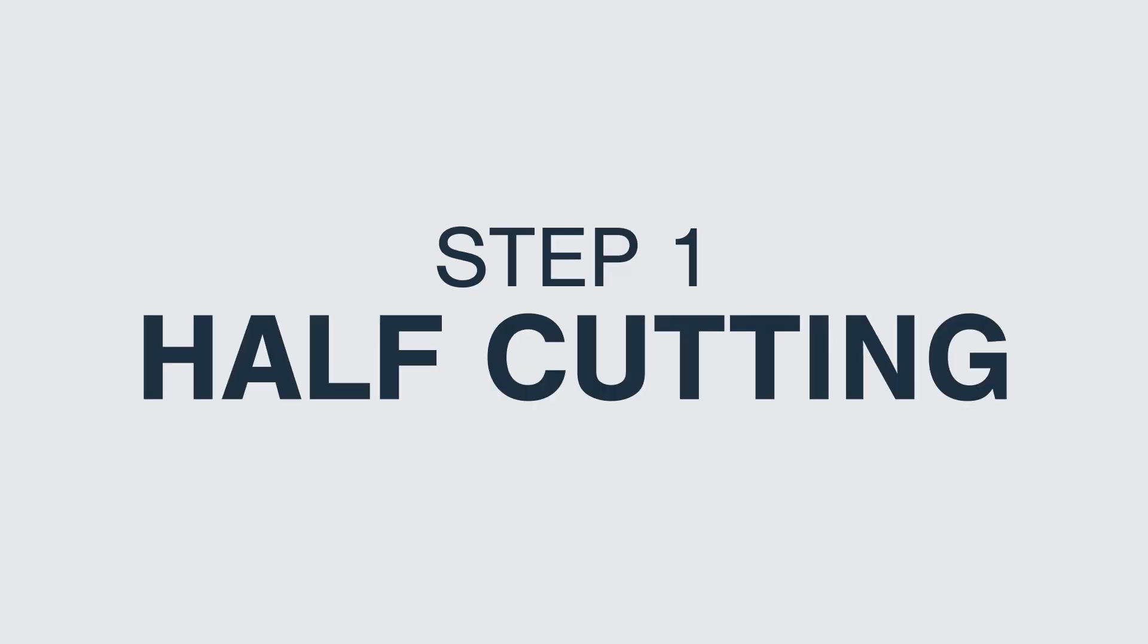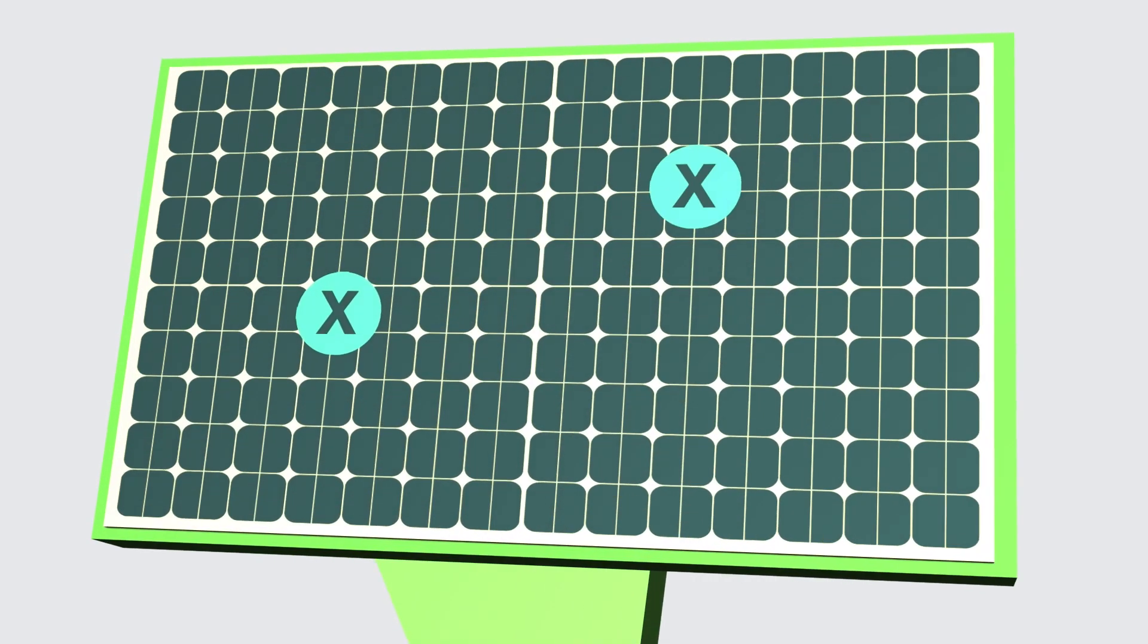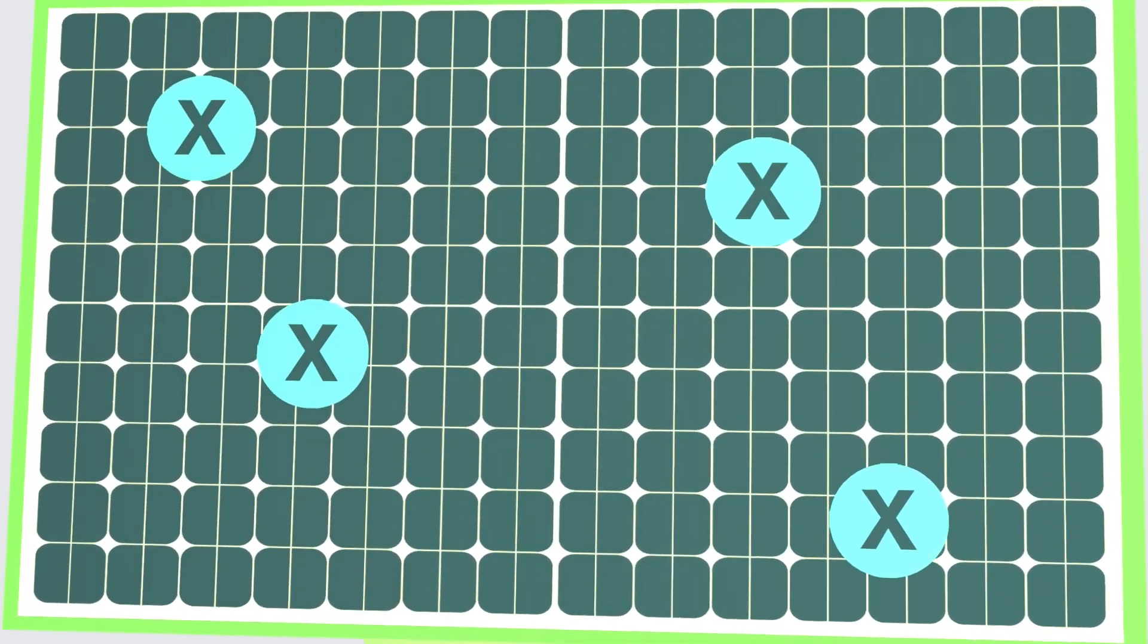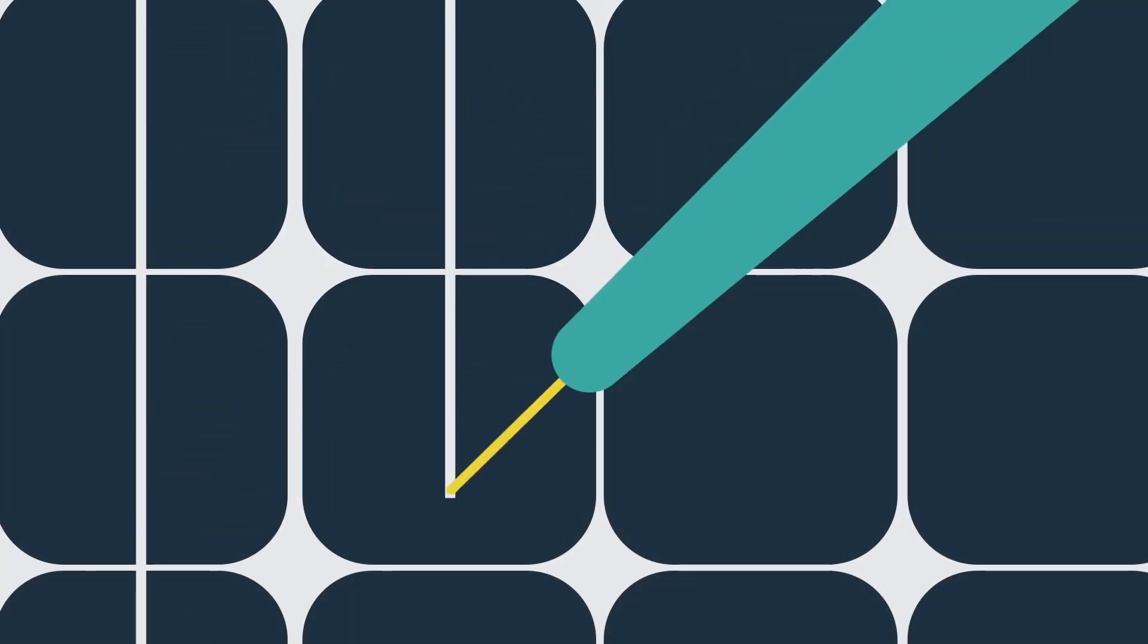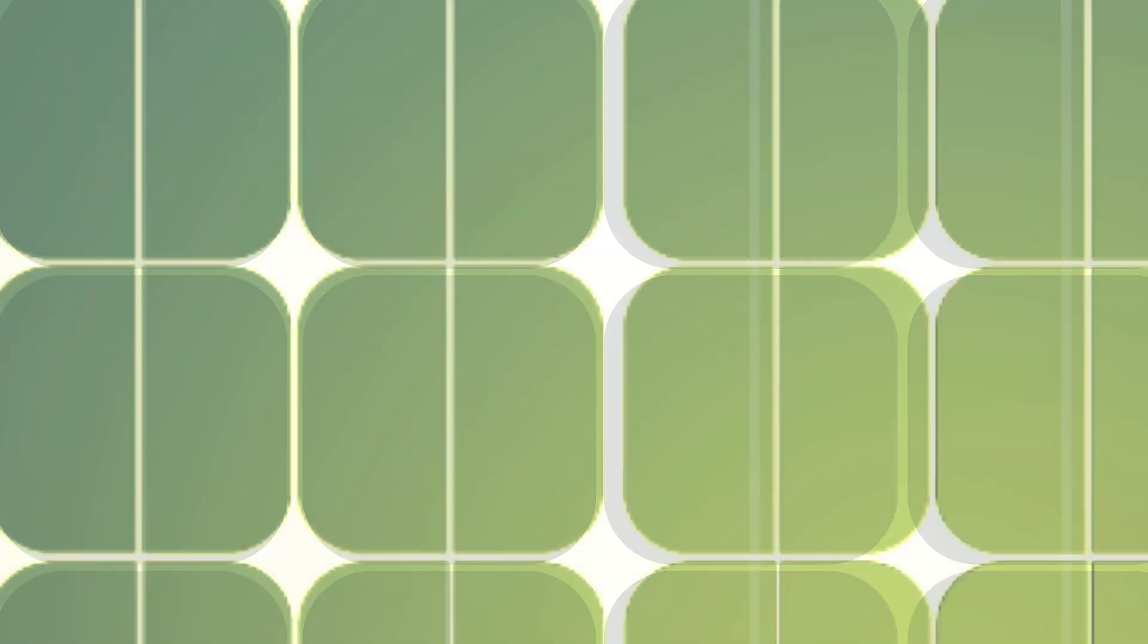Step 1. Half-cutting. In order to reduce current losses and increase module power, it's a good solution to use the laser cutter to divide the cells in two and switch to small area cells in series.